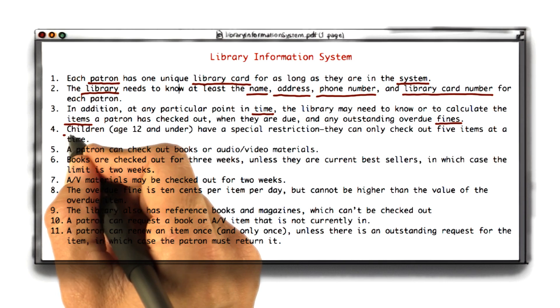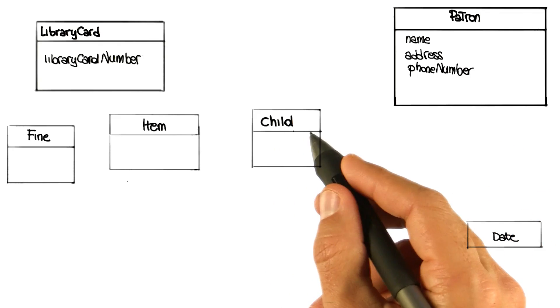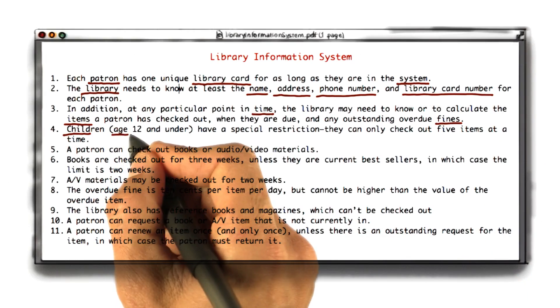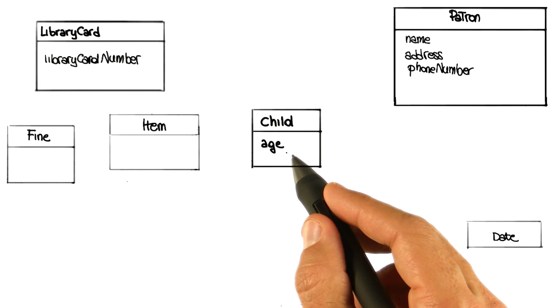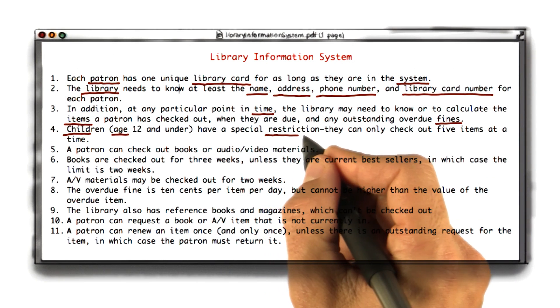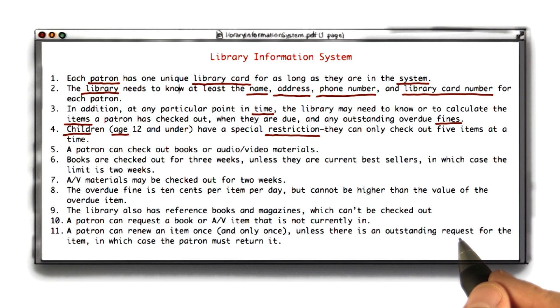Children are special customers — their age makes a difference in the way things work; they can only check out a few books. So I'll create them as a special kind of patron and create a class for children, characterized by their age, which I'll put as an attribute of the child. The next one is restriction, but that's kind of tricky because it seems to be a general concept — all of those requirements are restrictions — so we don't need to represent it explicitly. It's just another requirement, so I won't consider that for now.